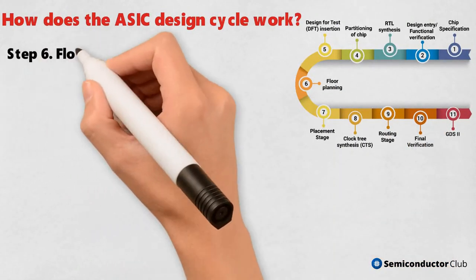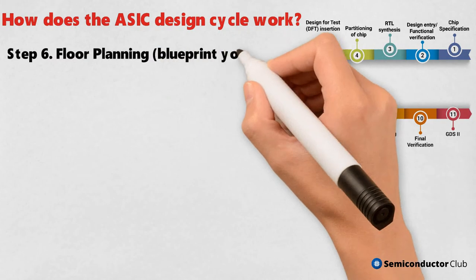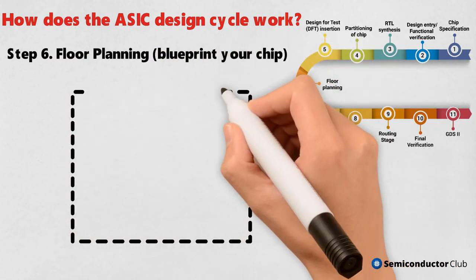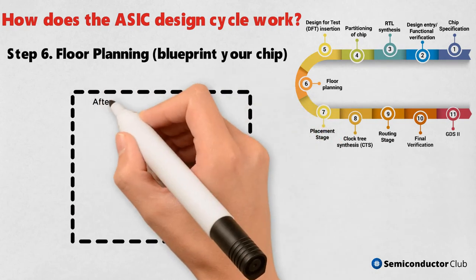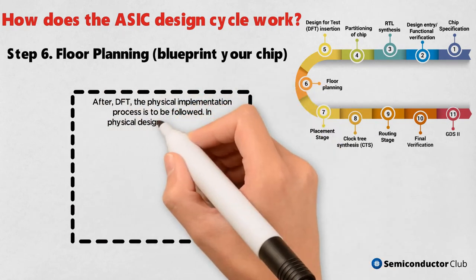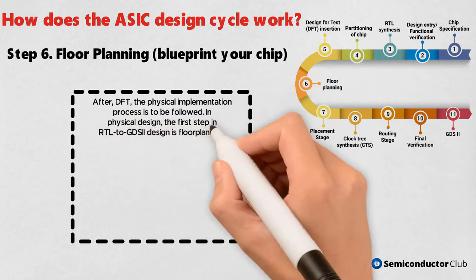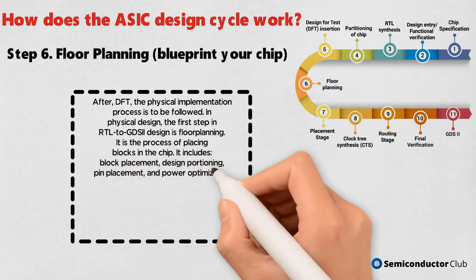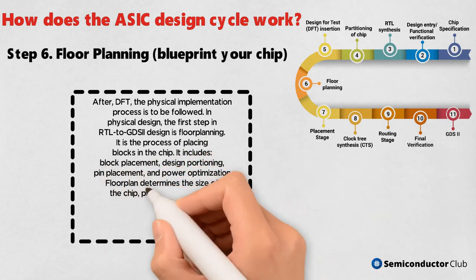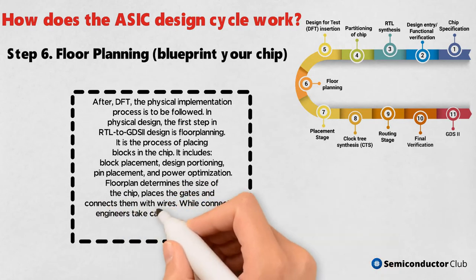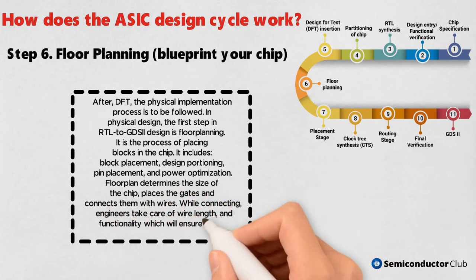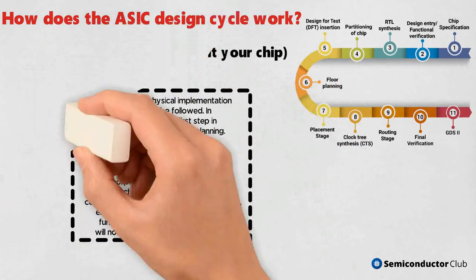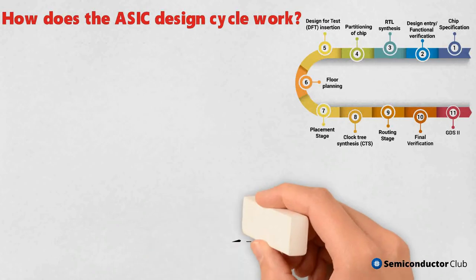Step 6: Floor Planning — blueprint your chip. After DFT, the physical implementation process is to be followed. In physical design, the first step in RTL to GDSII design is floor planning. It is the process of placing blocks in the chip and includes block placement, design partitioning, pin placement, and power optimization. The floor plan determines the size of the chip, places the gates, and connects them with wires, while engineers take care of wire length and functionality to ensure signals will not interfere with nearby elements.